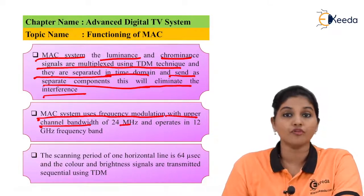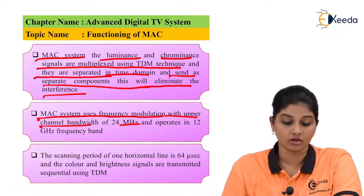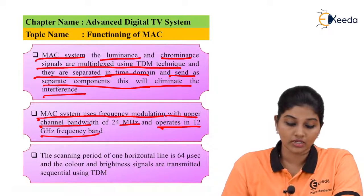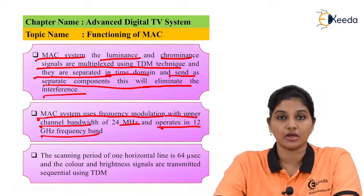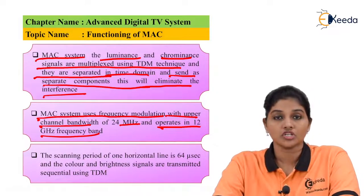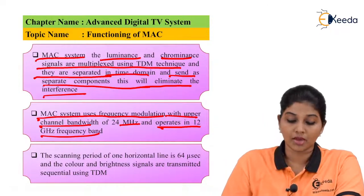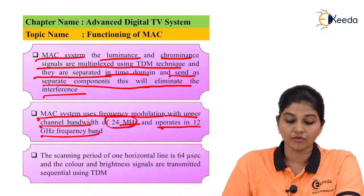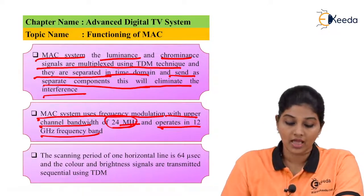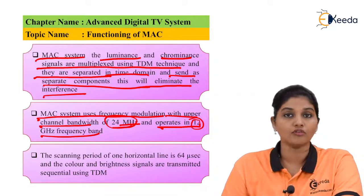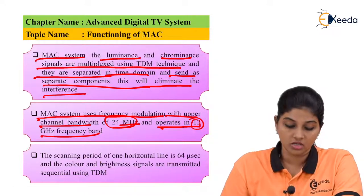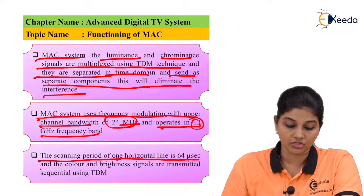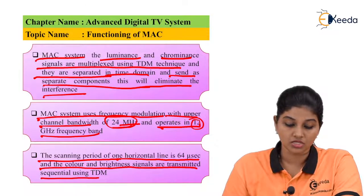The MAC system uses frequency modulation with an upper channel bandwidth of 24 MHz and operates in a 12 GHz frequency band. The scanning period of one horizontal line is 64 microseconds, and the color and brightness signals are transmitted using sequential TDM.